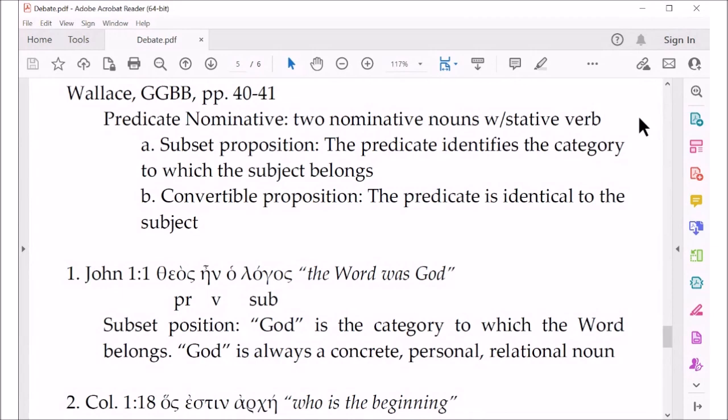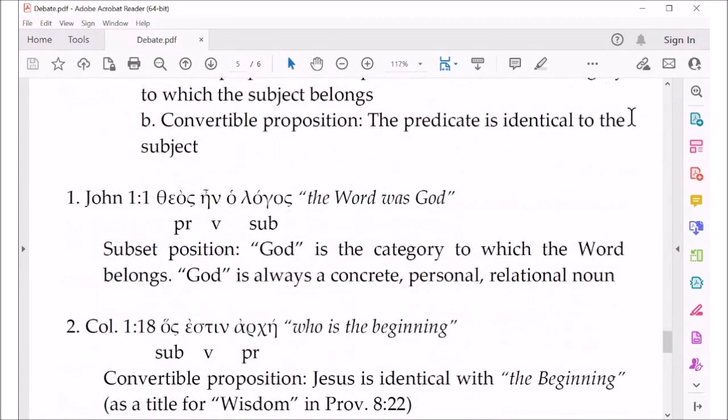Okay, so I do want to talk about this clause, the word was God, because this is a predicate nominative. It fits Wallace's description as the subset proposition, which means essentially that God is the category to which the word belongs in this particular. I agree with that.